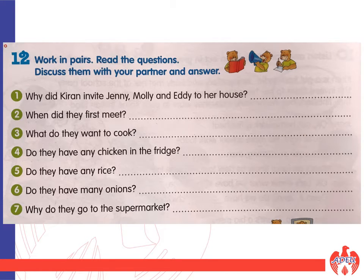Work in pairs. Read the questions. Discuss them with your partner and answer. 1. Why did Kiran invite Jenny, Molly, and Eddie to her house? 2. When did they first meet? 3. What do they want to cook? 4. Do they have any chicken in the fridge? 5. Do they have any rice? 6. Do they have many onions? 7. Why do they go to the supermarket?